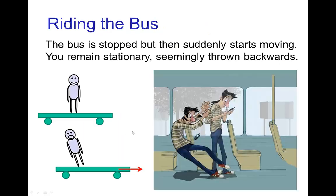A more simple common example of this would be if you're riding on the bus and the bus is sitting at a stop light, so it's not moving, but then it suddenly starts moving quickly — so it accelerates — well, you will remain stationary at rest until there's a force acting on you. So in this case, it seems as if you are thrown backwards as the bus moves out from underneath you.